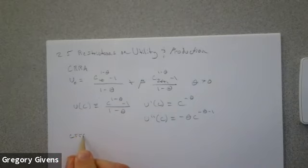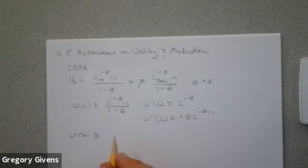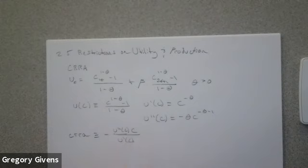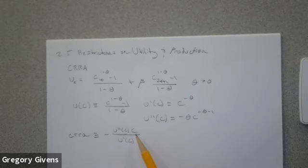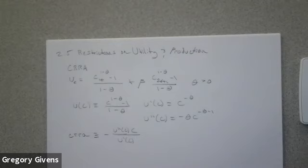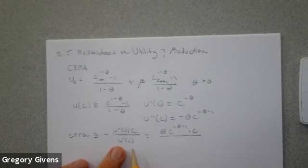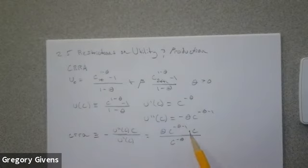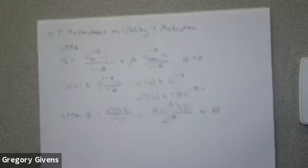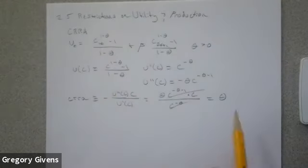The coefficient of relative risk aversion is defined as the negative of the second derivative times C divided by the first derivative — essentially the ratio of the second to first derivative, scaled by the level of the variable. This ratio equals: negative U'' times C over U'. Negative U'' is theta C^(-theta-1), times C, divided by U' which is C^(-theta). This simplifies to theta times C^(-theta) over C^(-theta), leaving just theta. So the coefficient of relative risk aversion in this class equals the parameter theta.